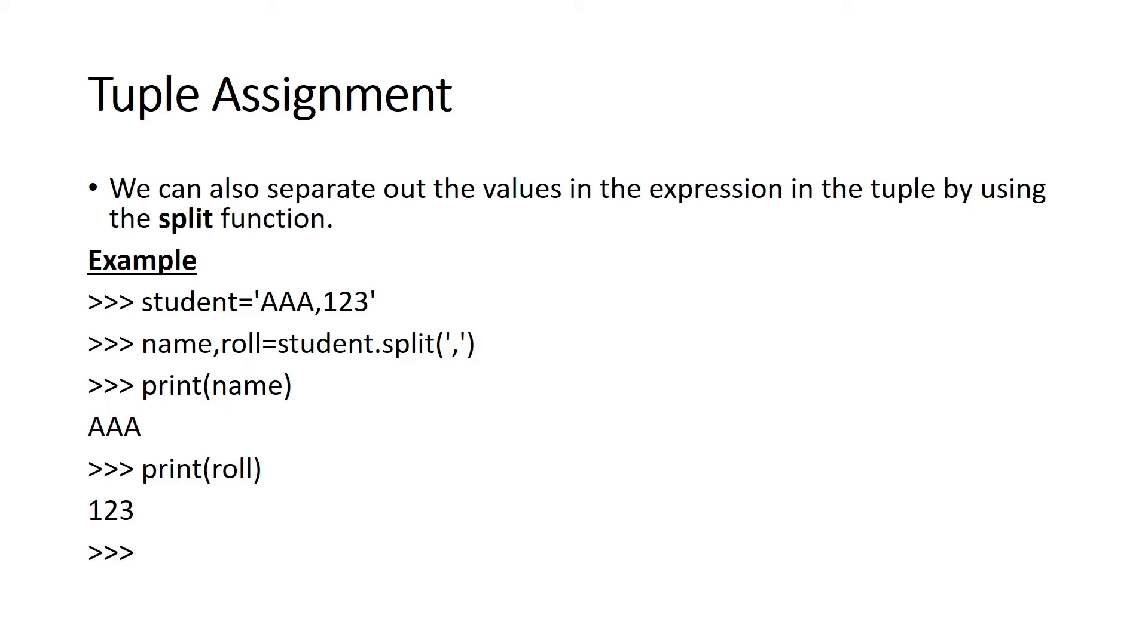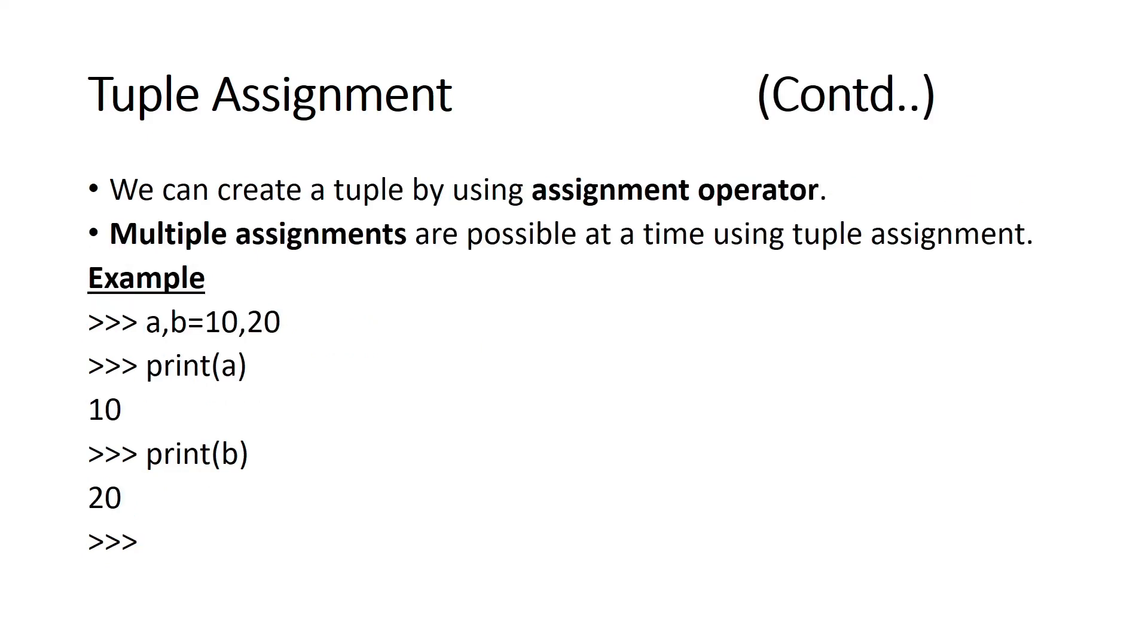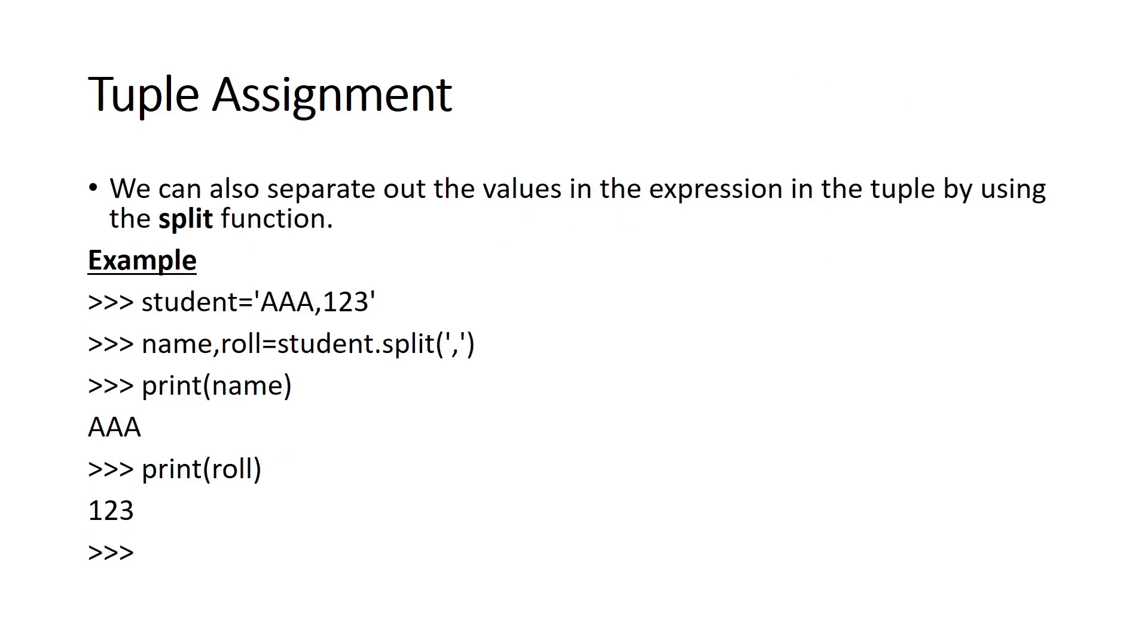For example, student equals 'AAA, 123'. We can separate the values and split them into two. Now the single variable student equals 'AAA, 123'. I am going to split it into two: AAA value and 123 value. So name, role - two random variables - equals student.split with comma command. The comma value splits it. So name equals AAA and role equals 123. The values are passed and split, then assigned to individual variables automatically.